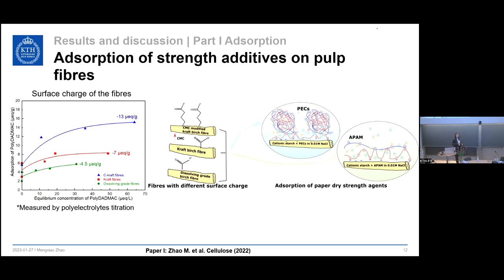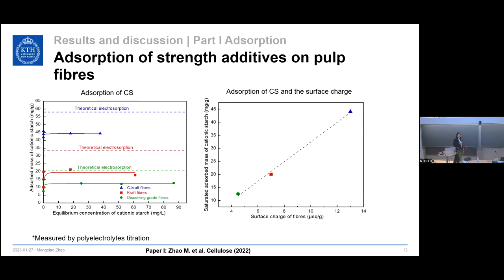Since fibers are negatively charged, we first adsorbed cationic starch, then on top of that we adsorbed anionic PEX or anionic PAM. In the adsorption results, we see that with increasing surface charge of the cellulose fibers, the adsorption of cationic starch also increased. When we plotted the relation between the saturation adsorption amount of cationic starch and the surface charge, we found a linear relationship. These experiments were carried out in 0.01 M sodium chloride, and the results are slightly lower than the theoretical electrosorption. All results indicate that adsorption of cationic starch is pure electrosorption, driven by entropy gain from the release of counter-ions.